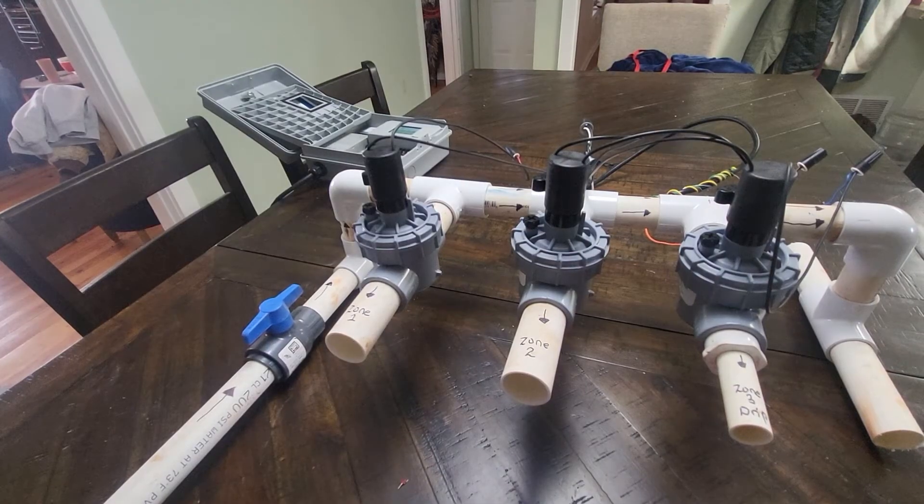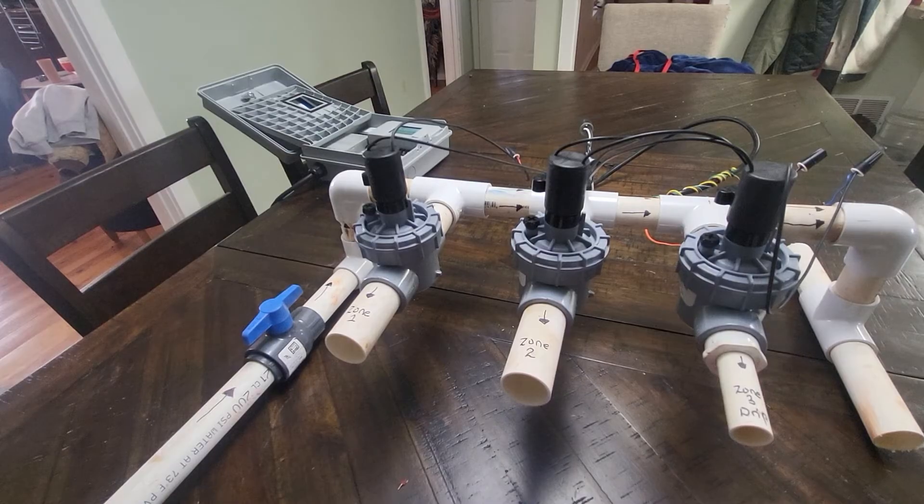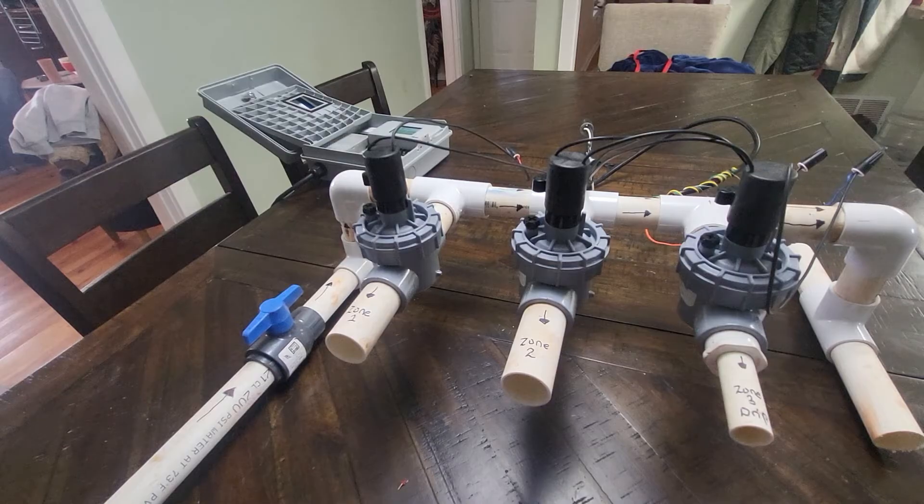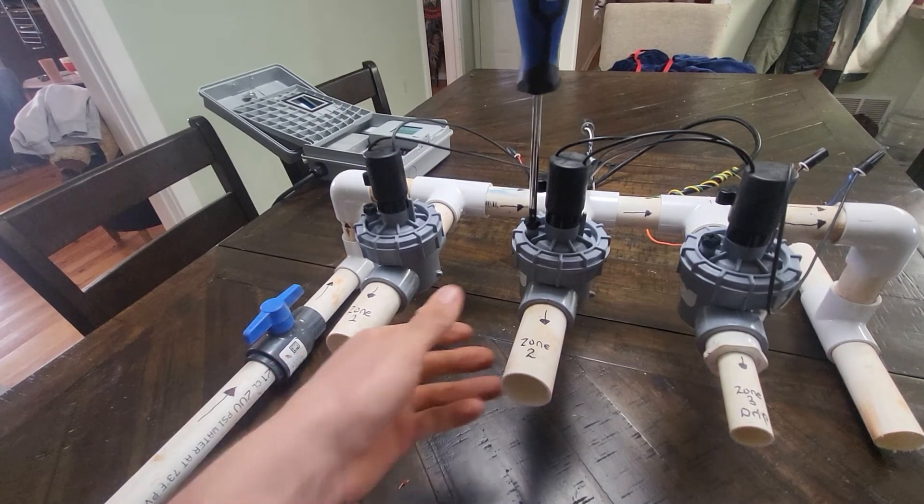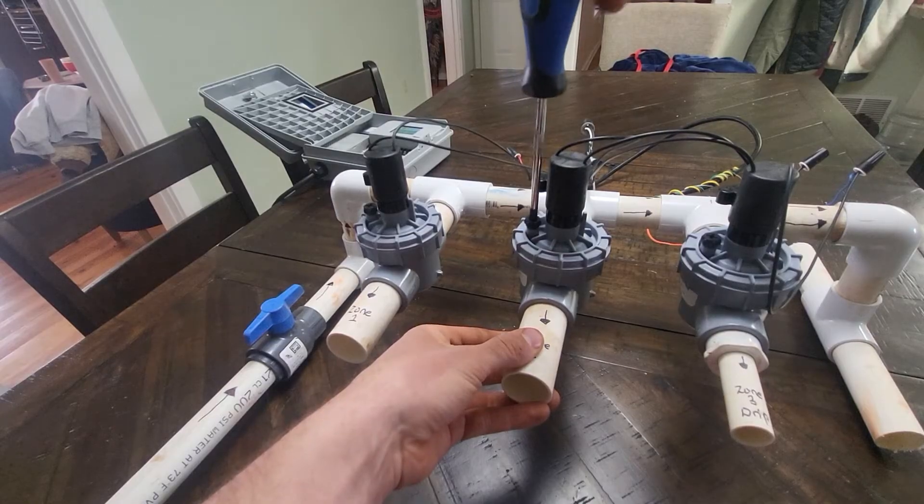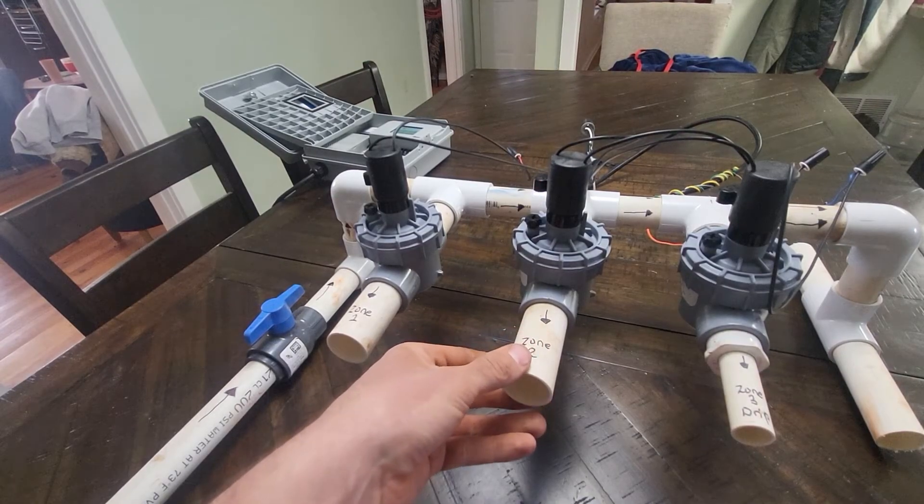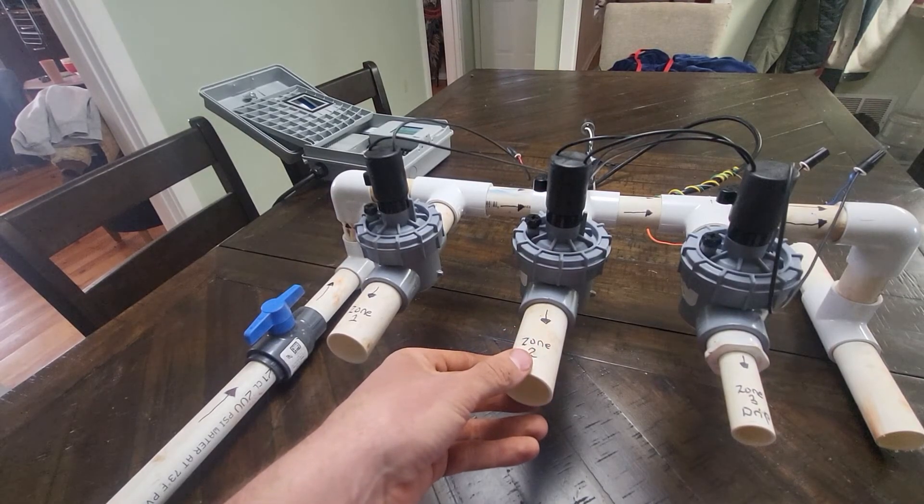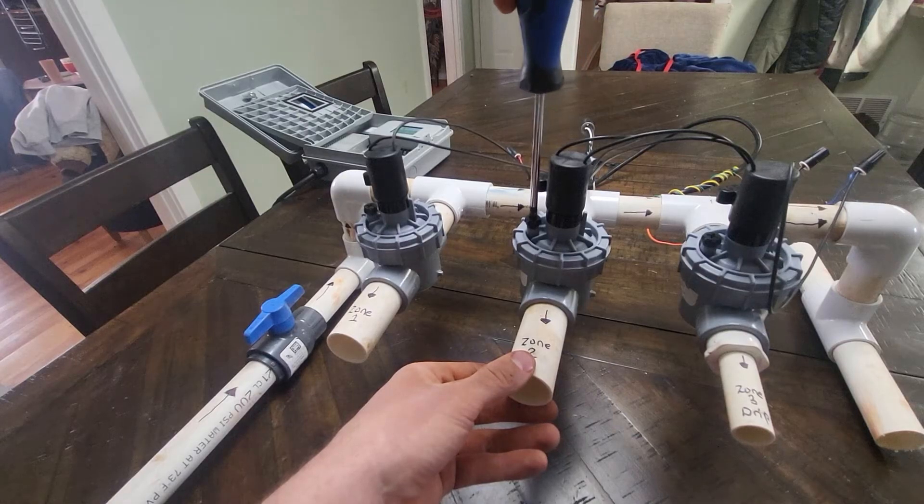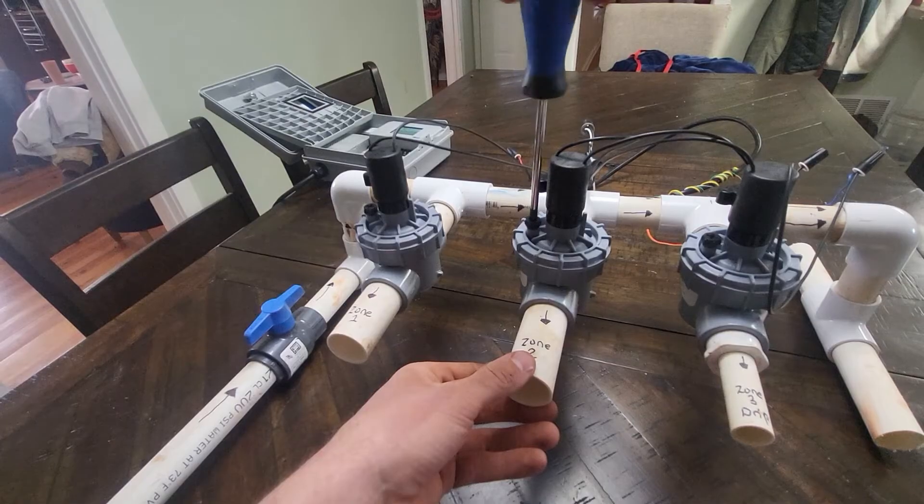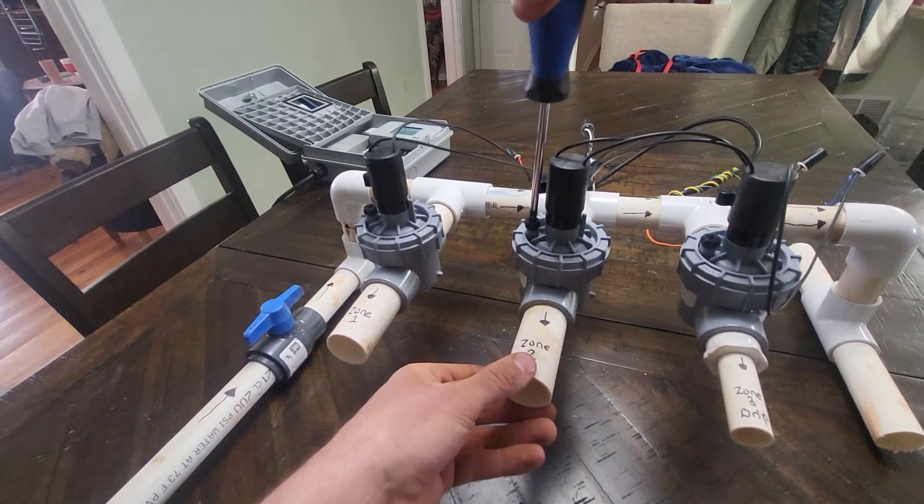The second way we can turn a valve on is by turning the bleeder screw a quarter to one half turn counter-clockwise. Doing this also creates a change in pressure within the valve, causing the diaphragm to open and the zone to turn on. Tightening the bleeder screw will turn the zone off. Expect water to come out of the bleeder screw if you choose this method.